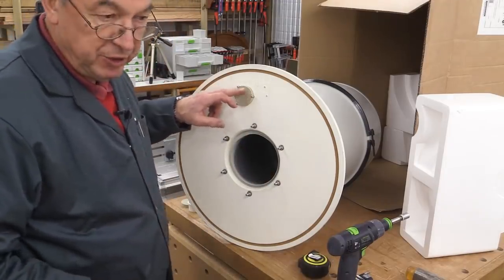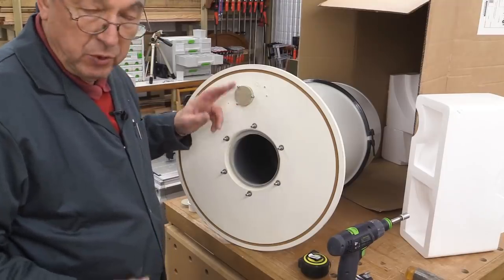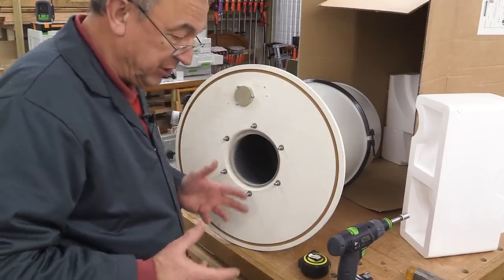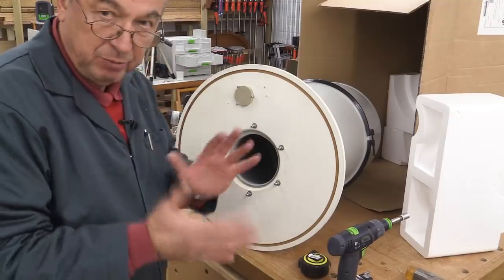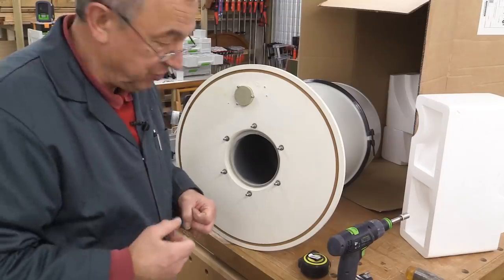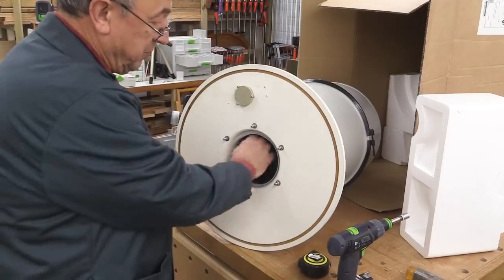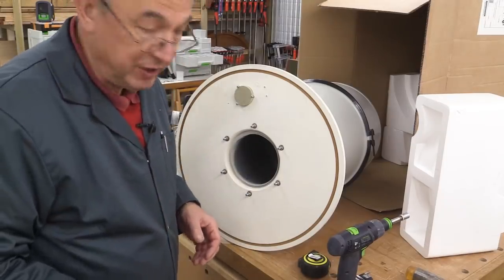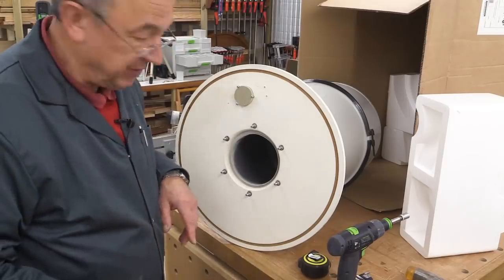Now this bit here is where my old pressure relief valve used to be. Of course, the old cyclone was made of plastic. So it's quite possible that if you had a blockage in your hose and the vacuum was working flat out, it could collapse the cyclone itself. Well, this is made of steel. That's not going to happen. So I've closed off that hole.